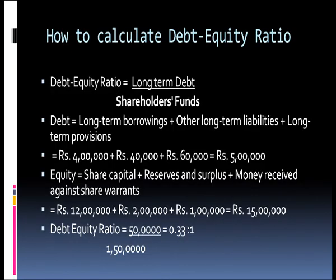The debt equity ratio equals long-term debt divided by shareholders' funds. Long-term debt includes long-term borrowings plus other long-term liabilities plus long-term provisions — never forget to add long-term provisions. Equity comprises share capital and reserves and surplus, and do not forget money received against share warrants. In this example, if debt is 5 lakhs and equity is 15 lakhs, the ratio comes out to be 0.33:1.